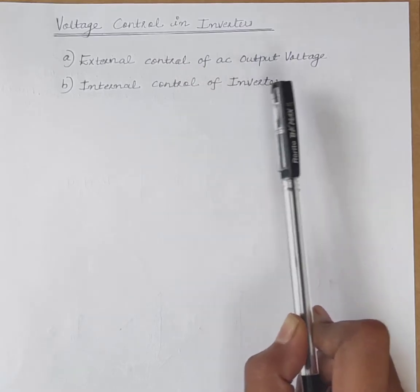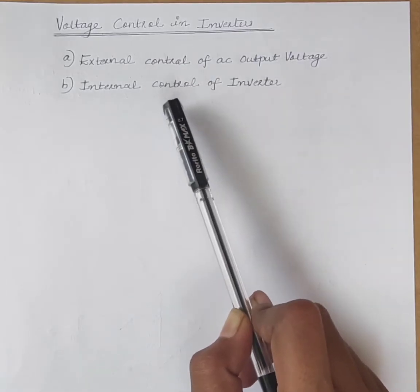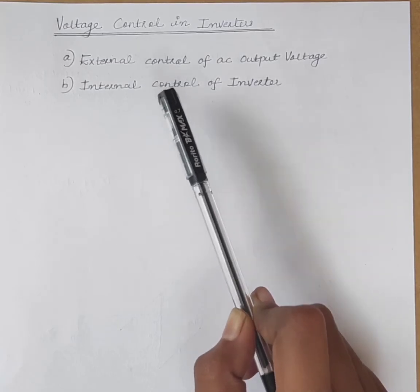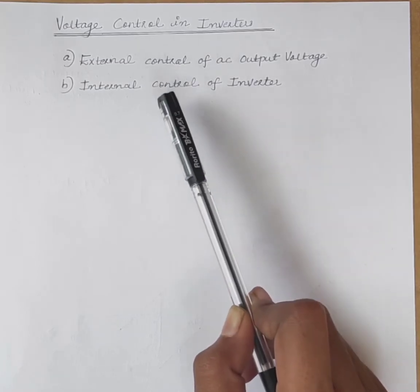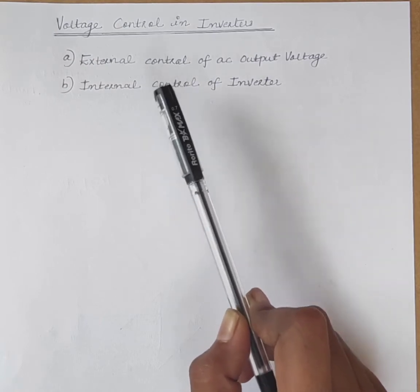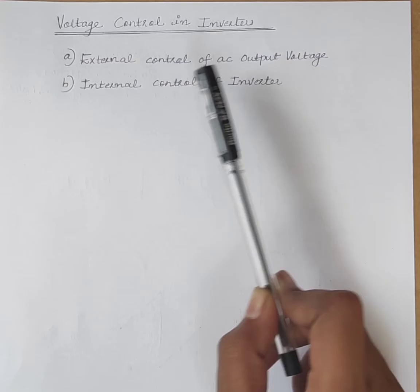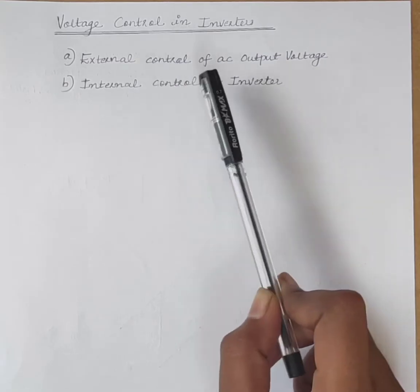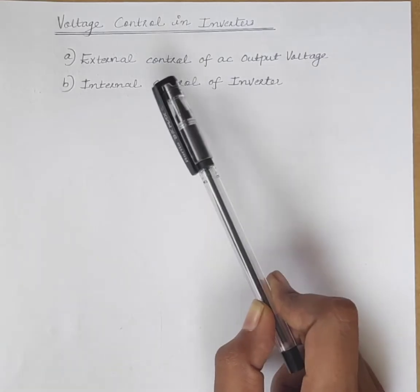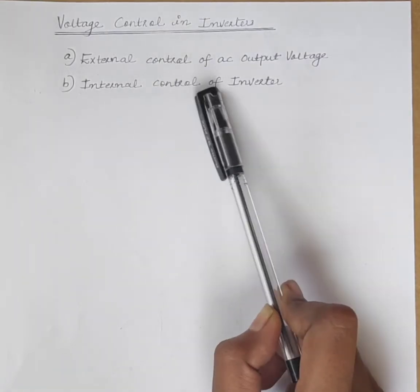Next is internal control of inverters. In this method, the output voltage from the inverter can be adjusted by providing a control within the inverter itself — that is, by controlling the on and off time of inverter switches.